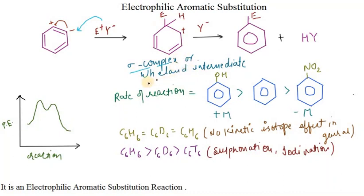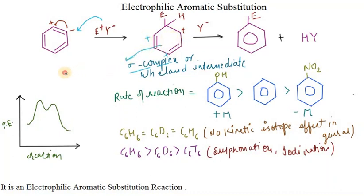The compound forming during this period is called a sigma complex. The intermediate is also known as the Wheland intermediate. This intermediate is stable because it is resonance-stabilized — the positive charge is delocalized to multiple positions on the ring.